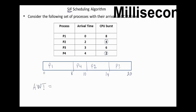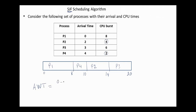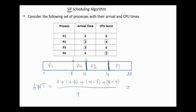The average waiting time is calculated as follows. Process 1 does not wait. Process 2 starts at time 4, but we subtract the arrival time, which is 4. Process 3 started at time 14 and the arrival time is 3. Process 4 starts at time 8 minus its arrival time of 4. This gives us (0 + 0 + 11 + 4) / 4 = 23/4, so the average waiting time is 5.75 milliseconds.